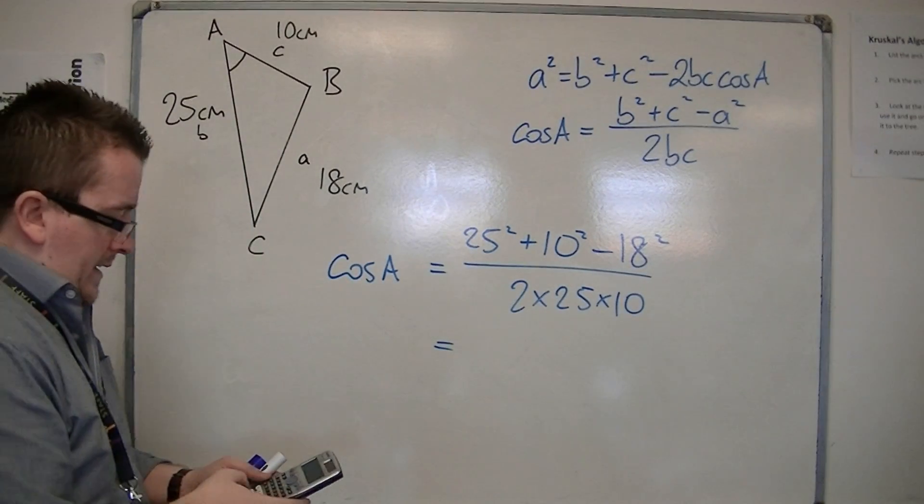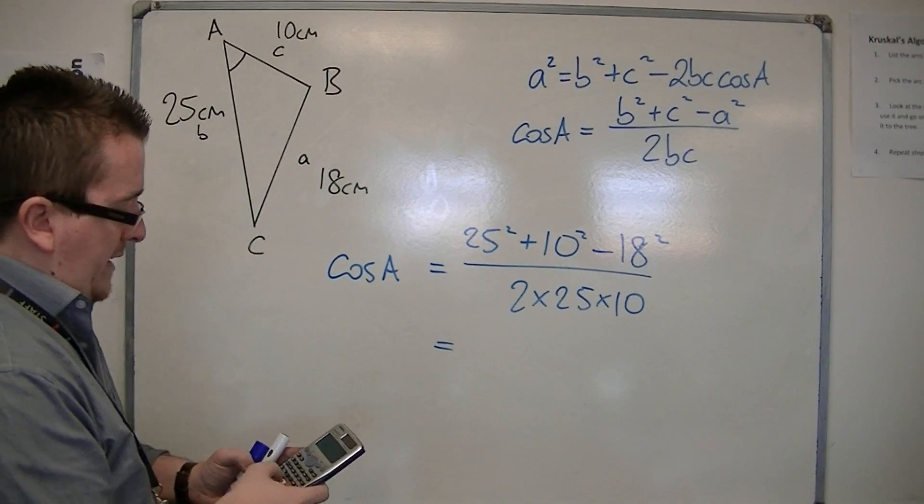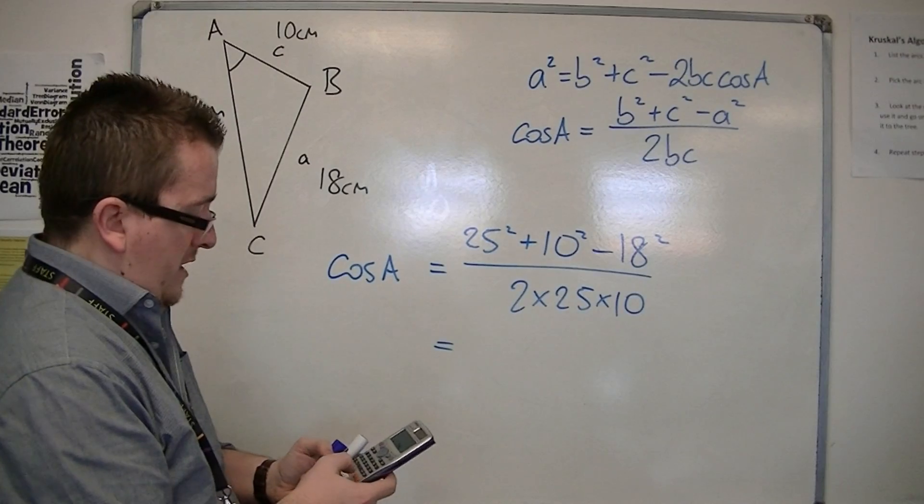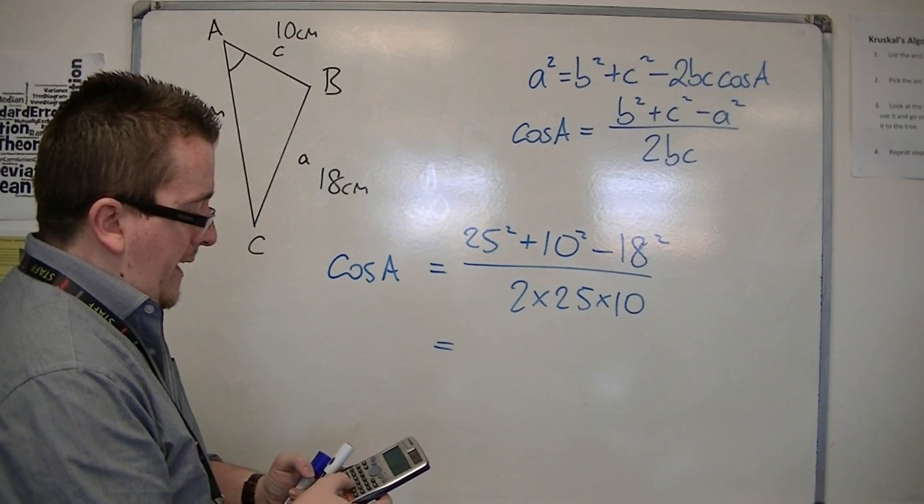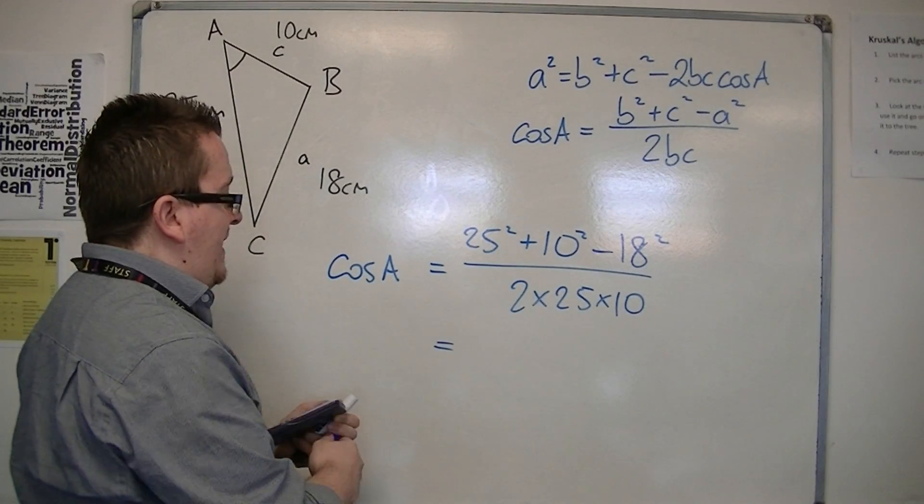So let's see what that is. 25 squared plus 10 squared minus 18 squared, so that's 401 on the top, divided by 2 times 25 times 10, so that's 401 over 500, so 0.802.